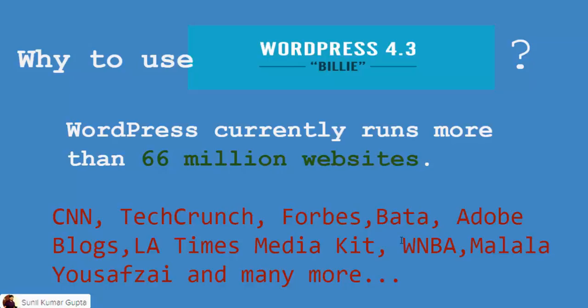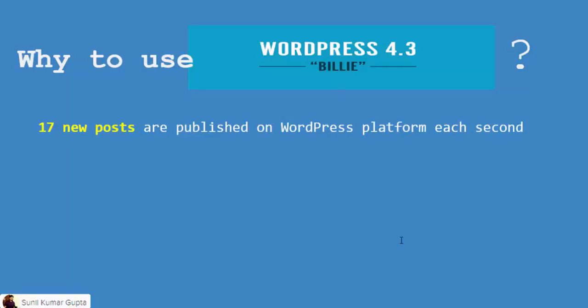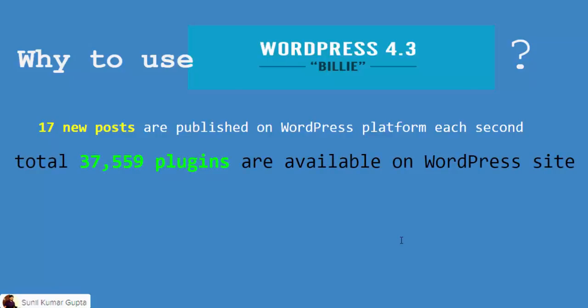You can see all the top companies, tech companies, and prominent people are using WordPress for their websites and blogs. That's what makes WordPress stay ahead of all other content management systems. Also, 17 new posts are published on the WordPress platform every second — that says much about the popularity of WordPress. There are 37,559 plugins available on the WordPress website, most of them free, and these numbers increase day by day.